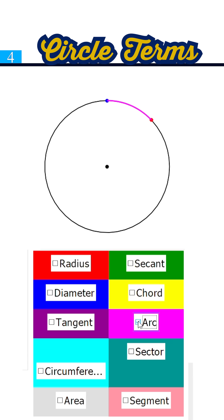Arc, a curved part of the circle's circumference. Sector, a slice of the circle, like a piece of delicious pie. Segment, the region between a chord and its arc.